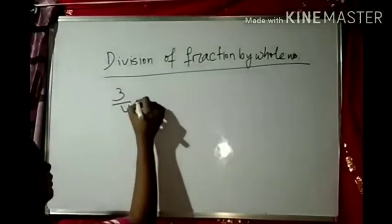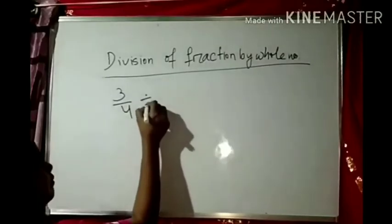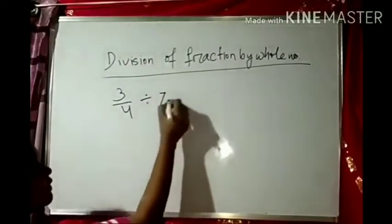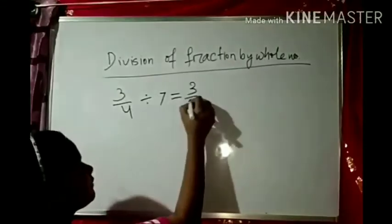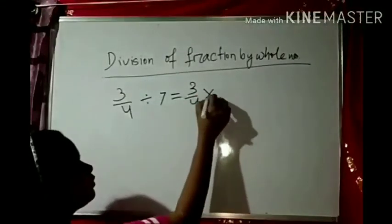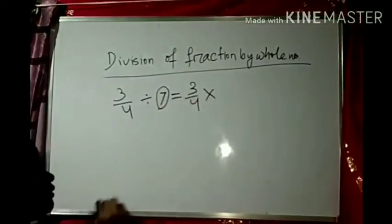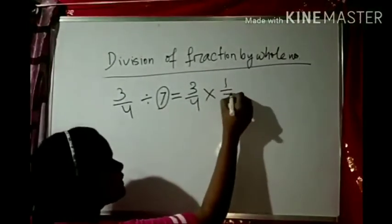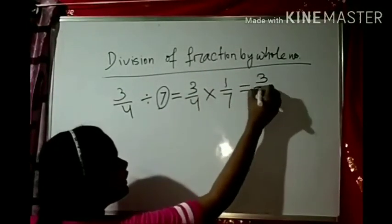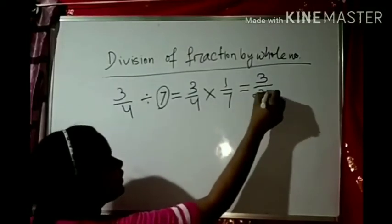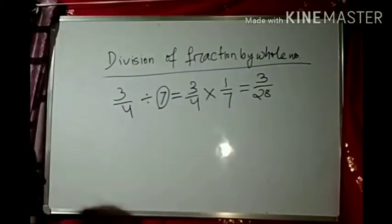First example: division of a proper fraction by a whole number. 3 by 4 divided by 7. This equals 3 by 4 into the reciprocal of 7, which is 1 by 7. Multiply: 3 into 1 equals 3, and 4 into 7 equals 28. So the answer is 3 by 28.